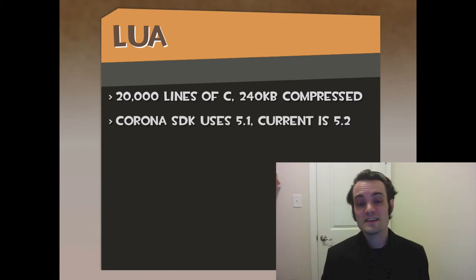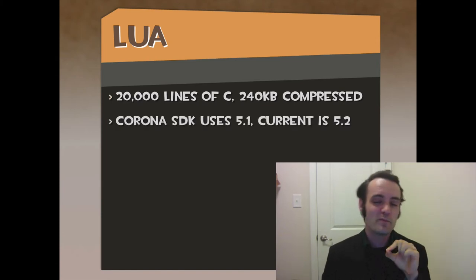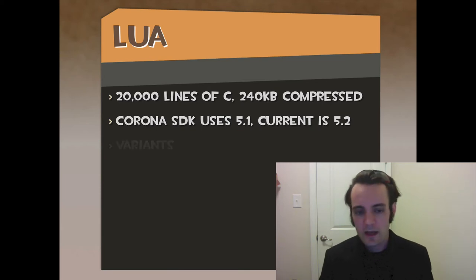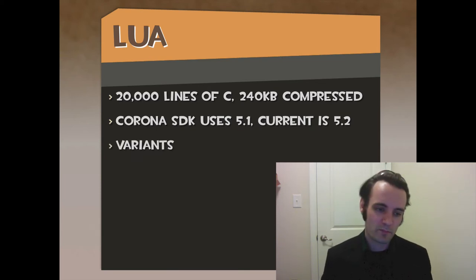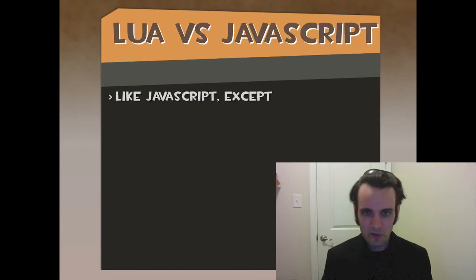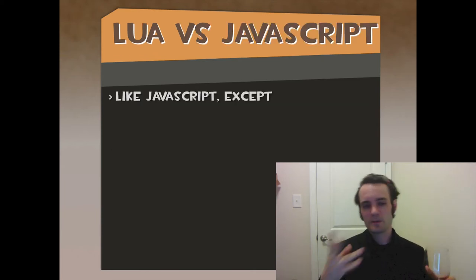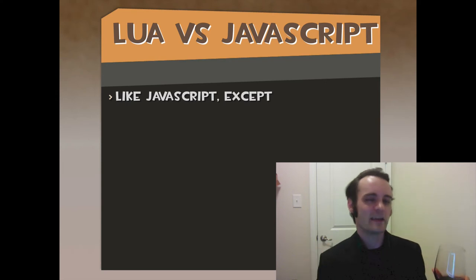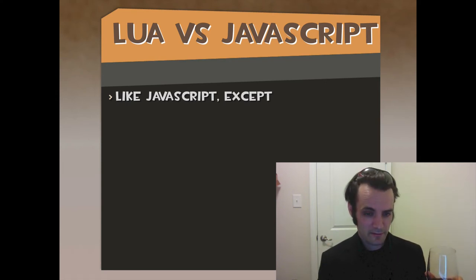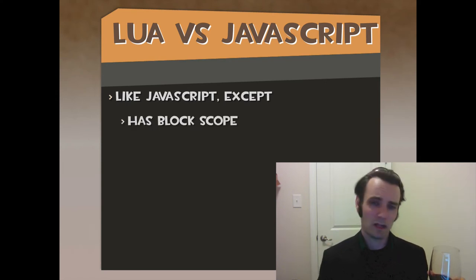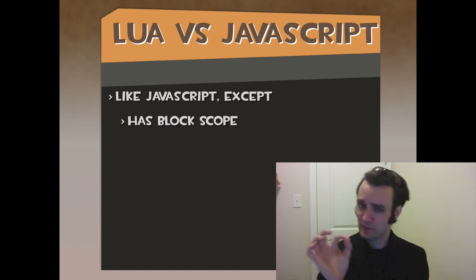The Corona SDK currently uses version 5.1 of Lua. 5.2, I believe, is the current version, and I'll get to the differences in a bit — they all use variants. Because JavaScript is kind of a popular language, let's compare the two. Lua is like JavaScript, except Lua has block scope, very similar to C.